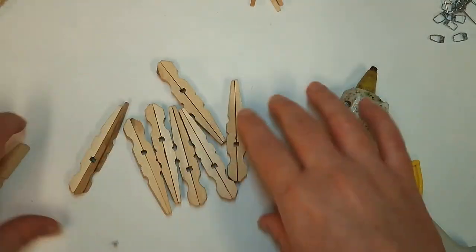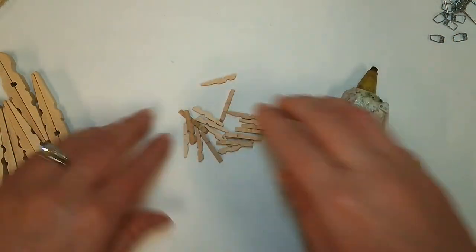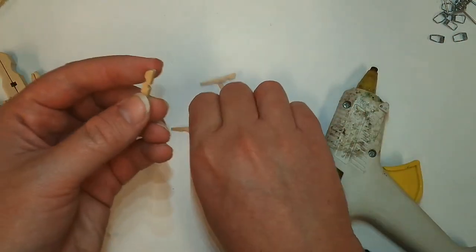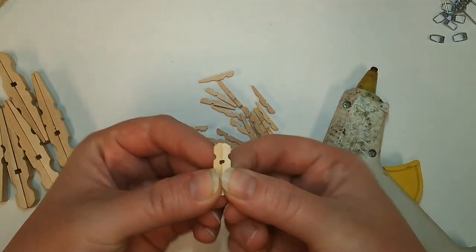Go ahead and set your first eight aside and do the same thing with your little ones. So the same thing, you're going to be matching up those little divots on each one, creating eight tiny.